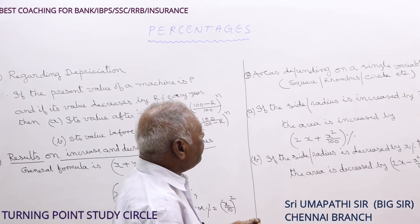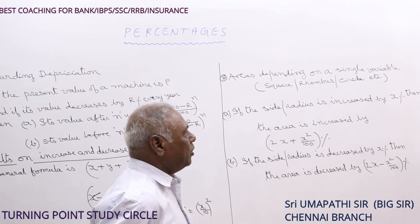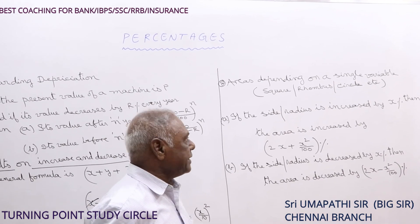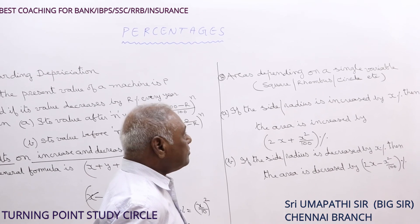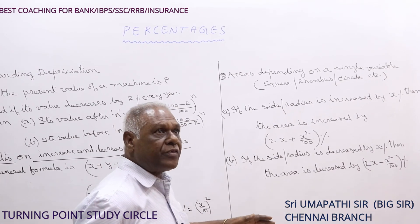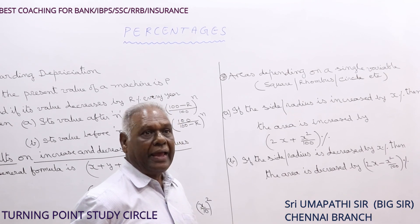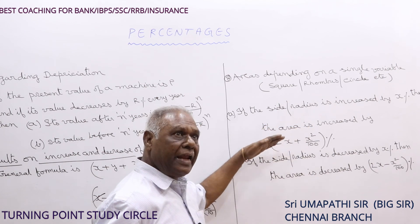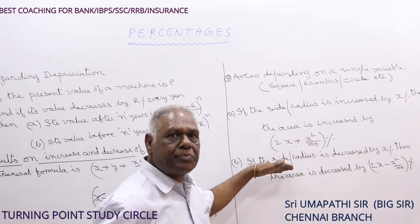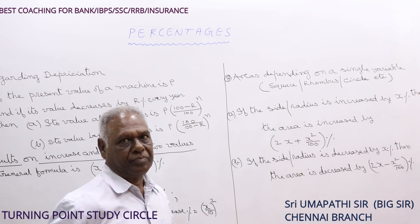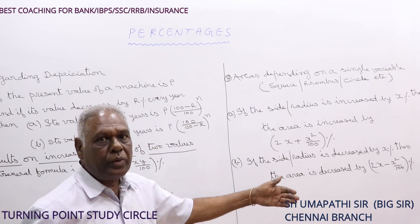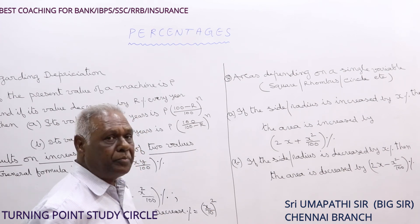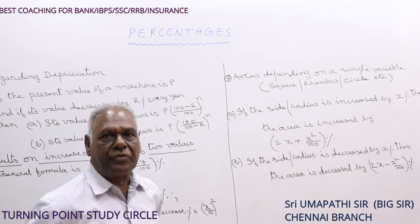When depending on a single variable — for example, square, rhombus, circle, equilateral triangle, etc. — the general formula is X + Y + XY/100. As X and Y are equal, if X% is the increase, it becomes 2X + X²/100 percent. If it is decreased, it is given by 2X − X²/100 percent. If you remember these formulas, you can solve the problems very quickly.